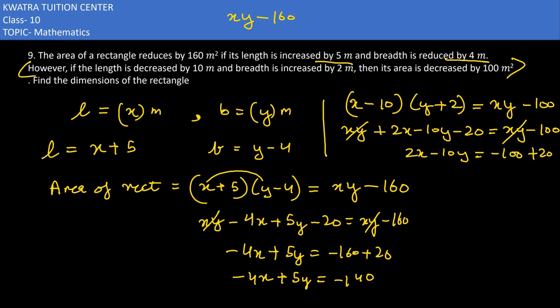So 2x - 10y = -100 + 20, which gives the second equation: 2x - 10y = -80. Now we have to find the values of x and y to get the actual dimensions of the rectangle. We can use elimination — one equation has 4x and the other has 2x, so we can multiply appropriately.